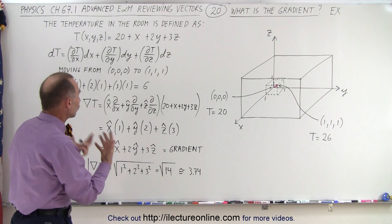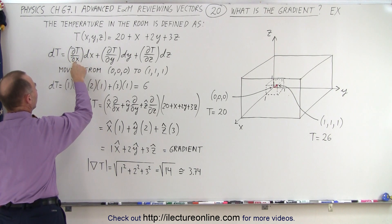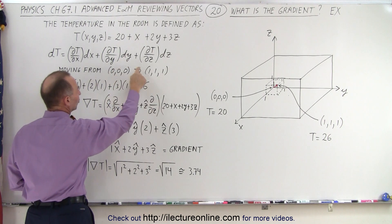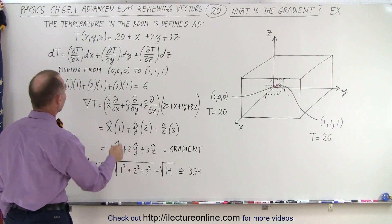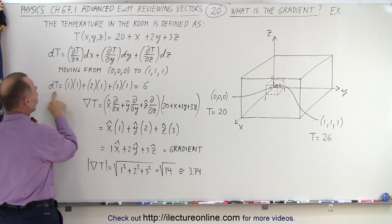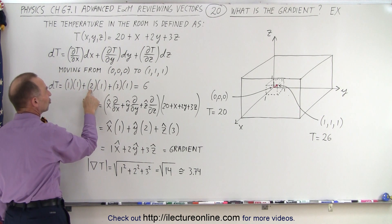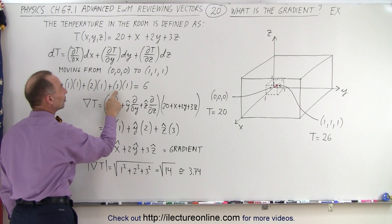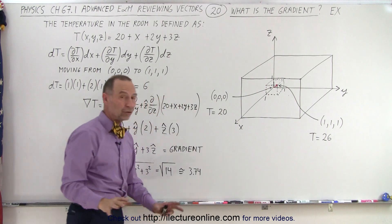First, we're going to show how a differential works as a comparison to the gradient. We define the differential — the change in temperature — as the partial derivative of temperature with respect to x times the change in x, plus the partial with respect to y times the change in y, plus the partial with respect to z times the change in z. Moving from (0,0,0) to (1,1,1): the rate of change in x is 1 times 1, plus 2 times 1 in y, plus 3 times 1 in z — adding up to a temperature change of 6 degrees, going from 20 to 26. But that's using differentials.